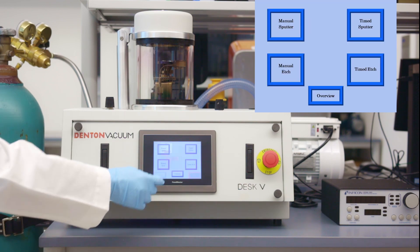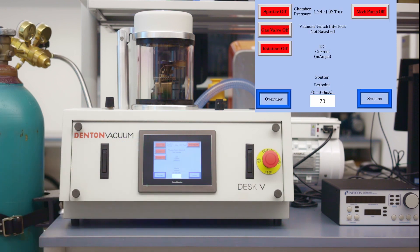Next, tap on screens, choose manual sputter. Tap on mechanical pump off. We will hear the vacuum pump running and the pressure in the chamber dropping.